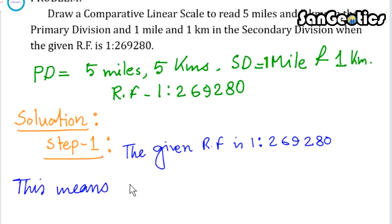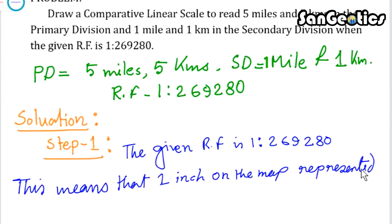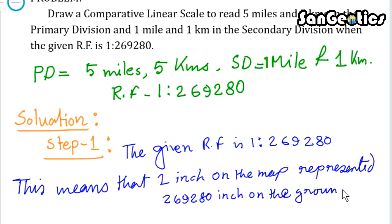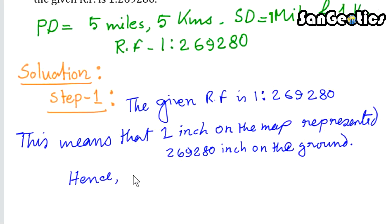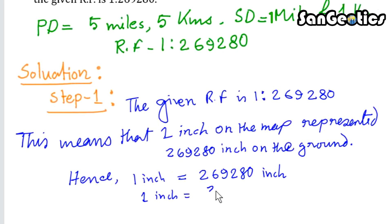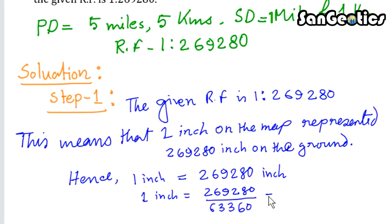This means that one inch on the map represents 269280 inches on the ground. Hence, one inch equals 269280 divided by 63360, which equals 4.25 miles.